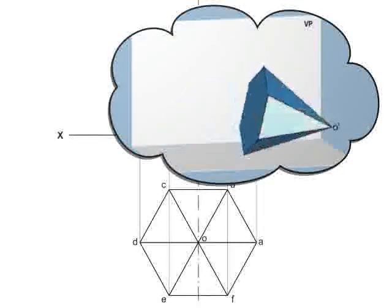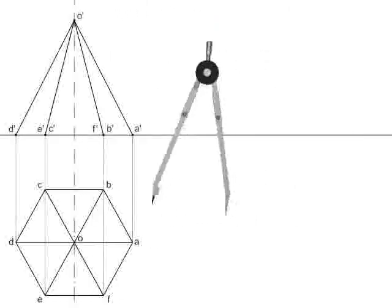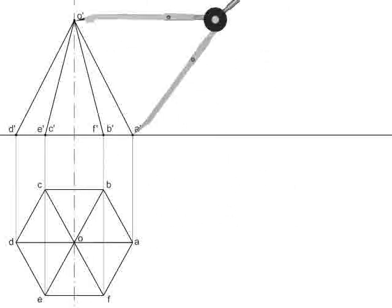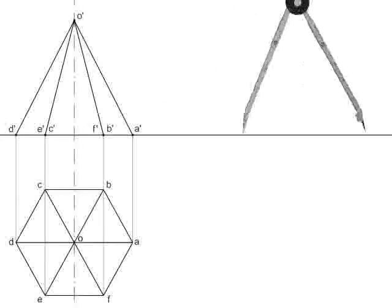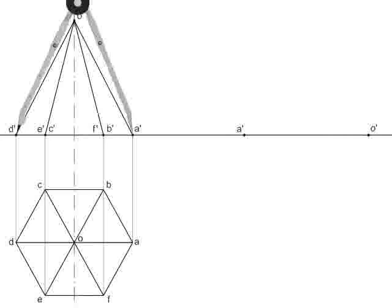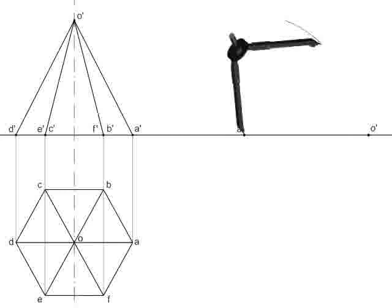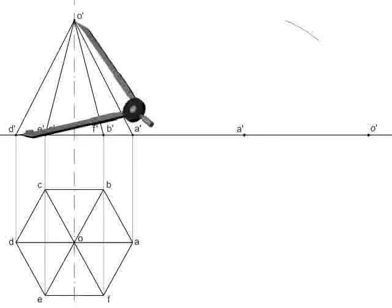For this, take the length of line A dash O dash and mark it on the XY line. Similarly, taking the measurement from the previous elevation, locate point D dash from A dash and O dash by drawing arcs.